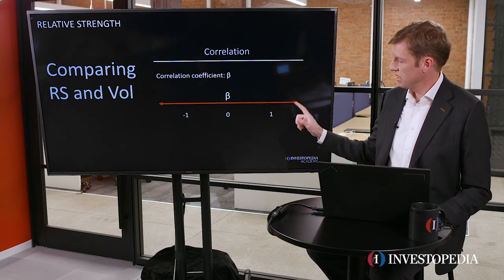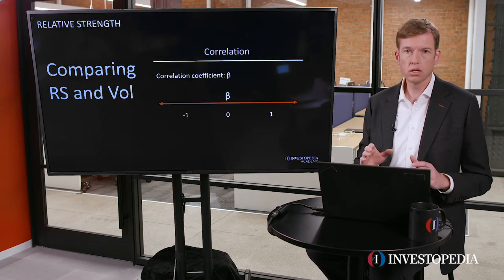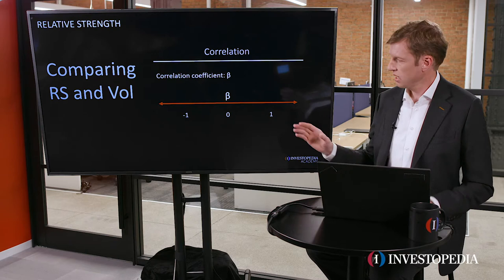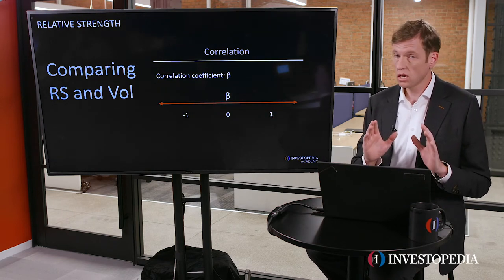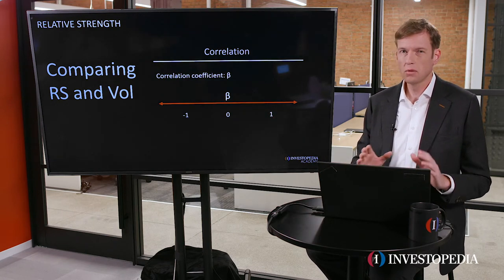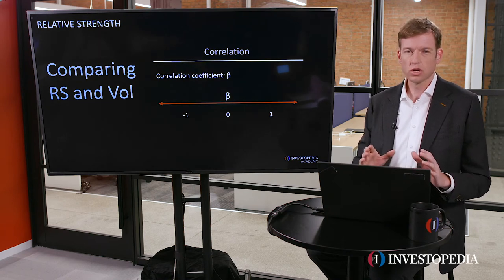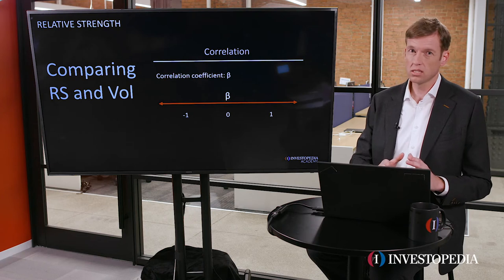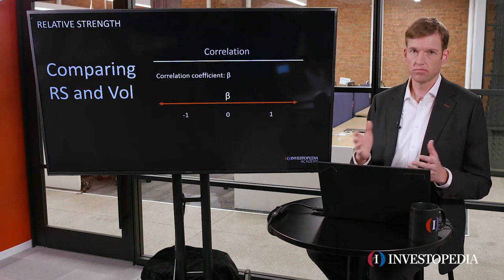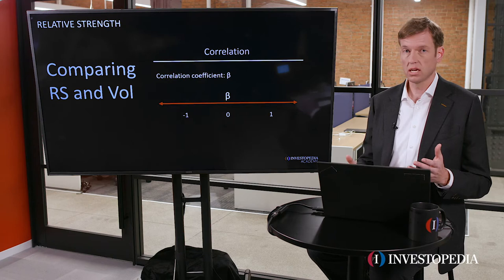If a stock had a beta of one exactly, that means it is highly correlated to the S&P 500. If a stock had a beta of zero, that means the stock is not necessarily underperforming the S&P 500 but is not very correlated to it. In other words, when the index goes up, the stock does not necessarily follow it, and by the same token, it doesn't necessarily follow the index lower.